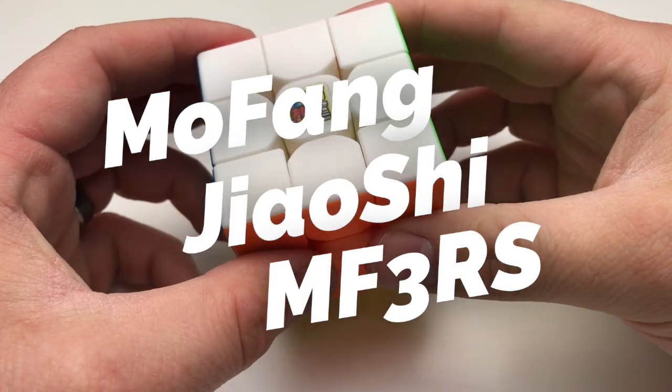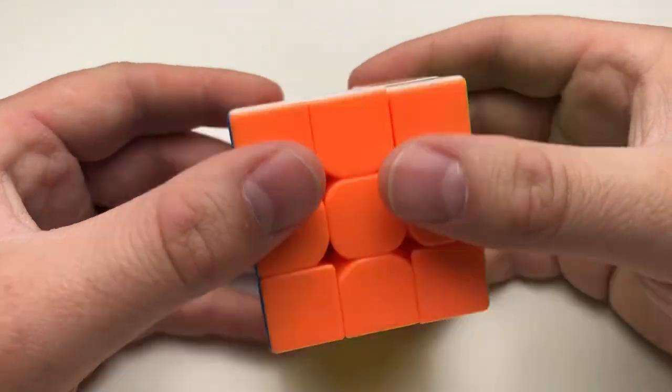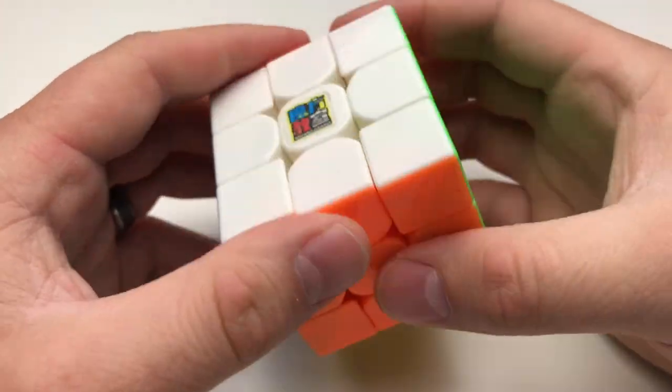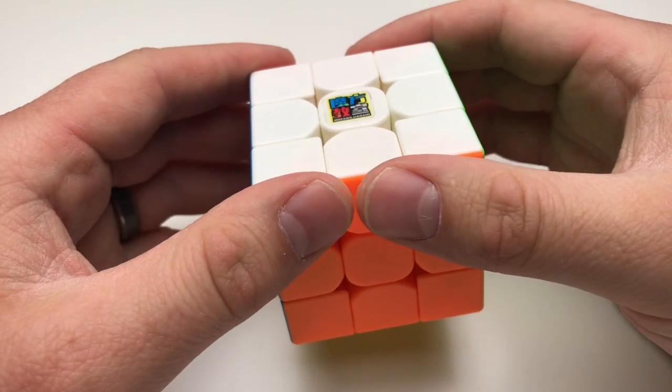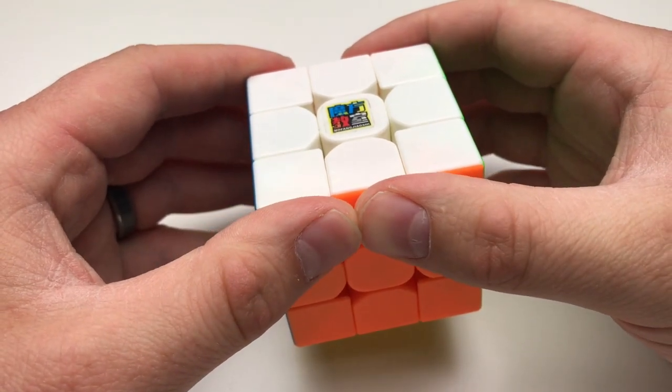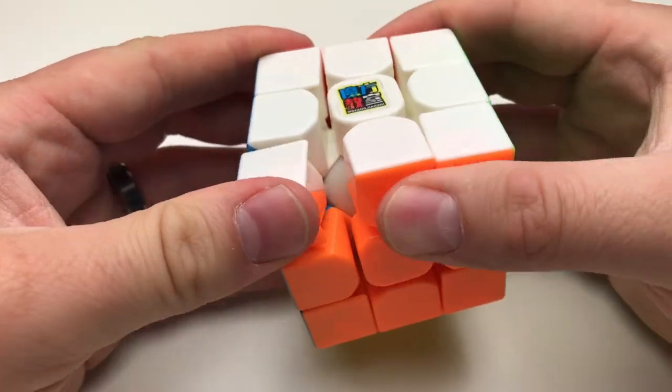All right, so I have here the Mofang Geoshi MF3 RS. Truthfully, this puzzle is pretty durable. It doesn't feel like a cheap puzzle. The piece separation could be better, but it really doesn't matter with this puzzle, in my opinion. Corner cutting struggles at the 45-degree mark, but to be safe, I'd say you can corner cut around the 30-40-degree mark.